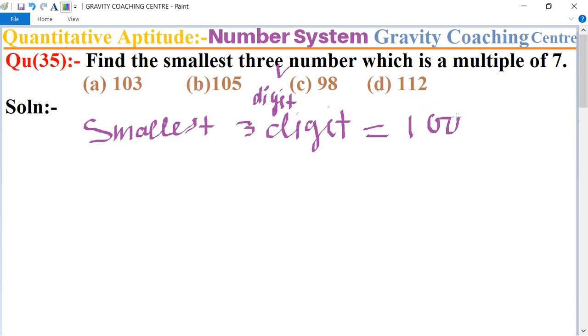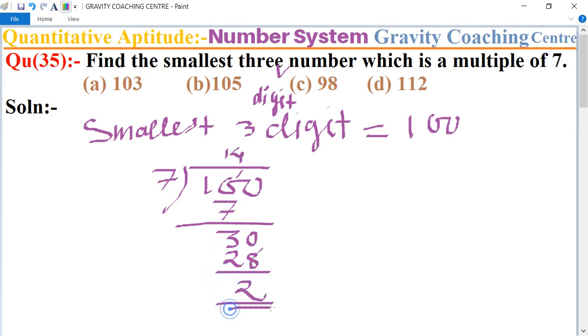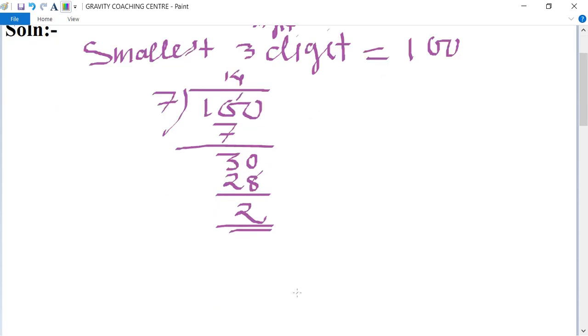So now we divide 100 by 7. Working through the division table, we find that 7 goes into 100 fourteen times, leaving a remainder of 2.